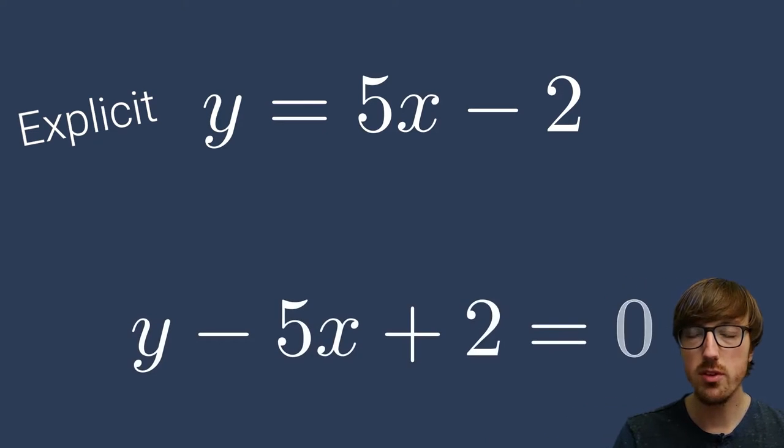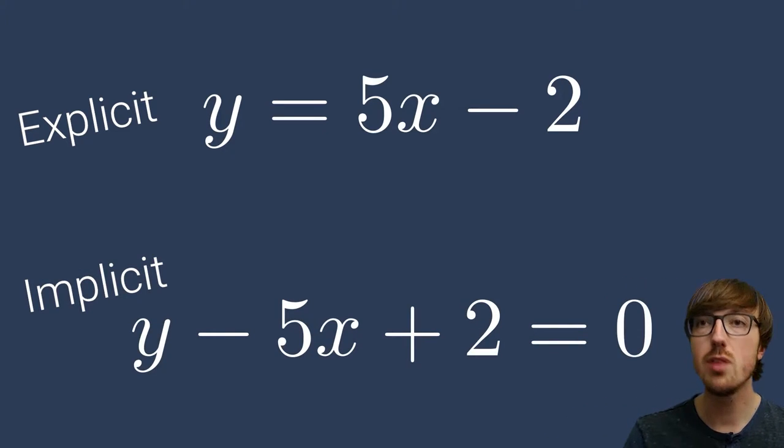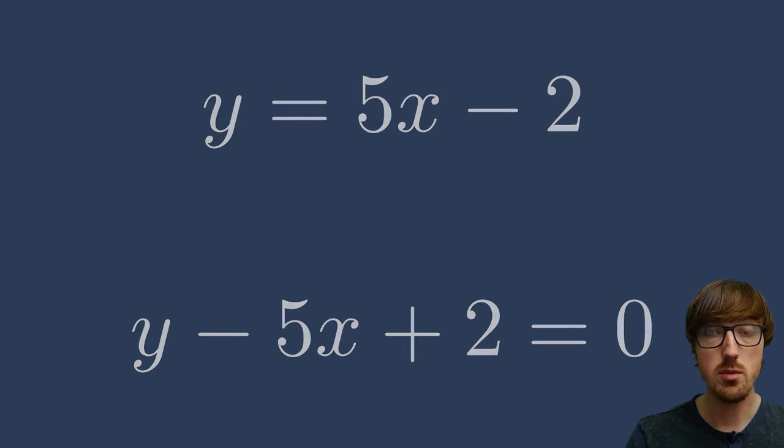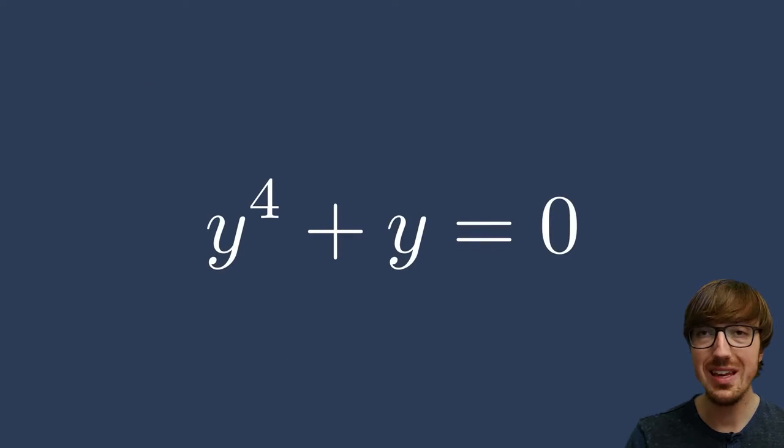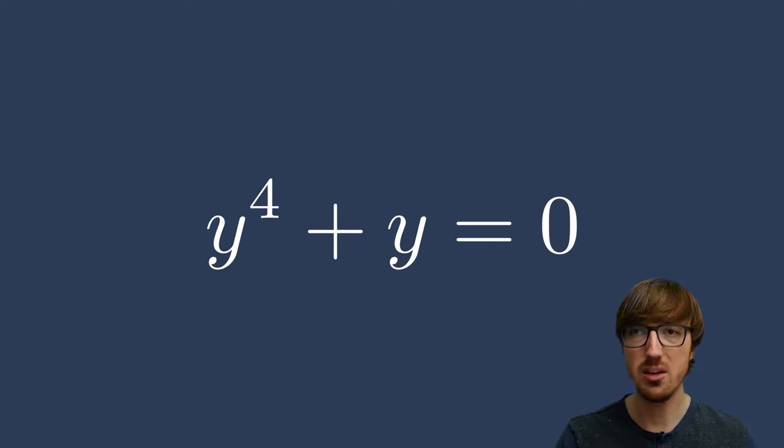Now on the bottom here, we have the same explicit function rewritten as an implicit function: y minus 5x plus 2 equals 0. It might not make much sense to write the equation in this format yet, but I hope that we can motivate that later and explain why when you write something like this in the implicit setup, it's generalizable for any number of inputs or outputs or any kind of relationships between them.